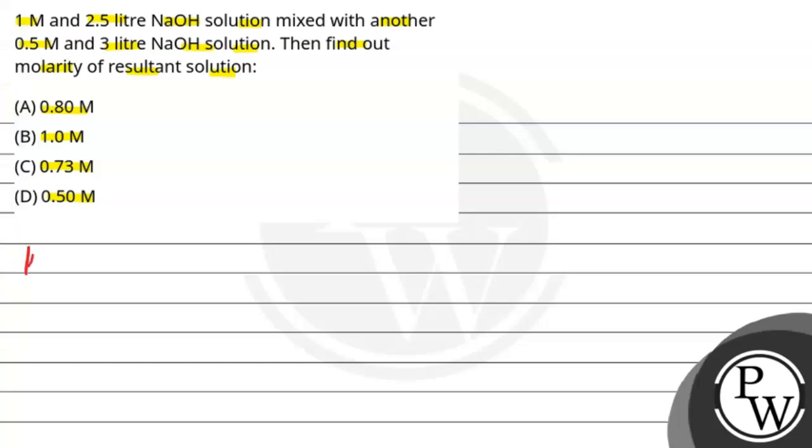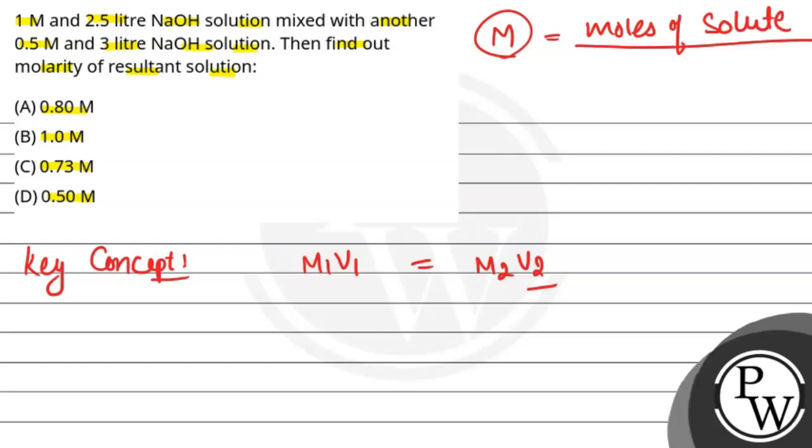So here we will put our key concept. We will use M1 V1 equals to M2 V2 formula. Now, we know molarity is moles of solute divided by volume of solution.